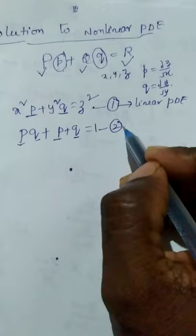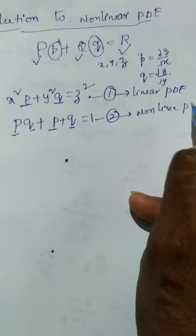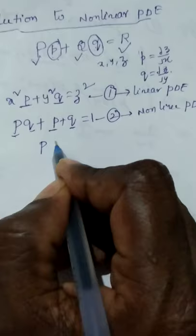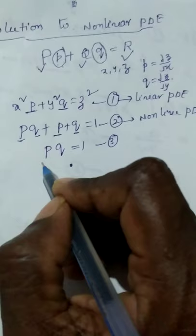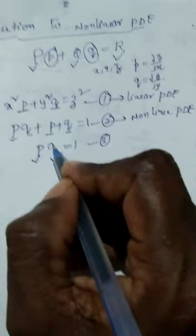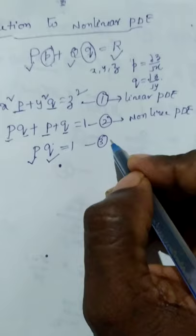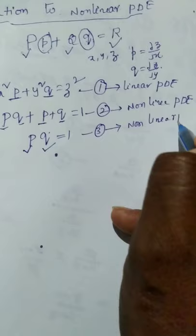Consider Example 2: p³ + p + q = 1. In this term, p appears two times, so it is not linear — hence it is a nonlinear PDE. Consider Example 3: pq = 1. Here p appears only one time and q appears only one time, but p and q appear in the same term. So this is not a linear equation — hence it is also a nonlinear PDE.